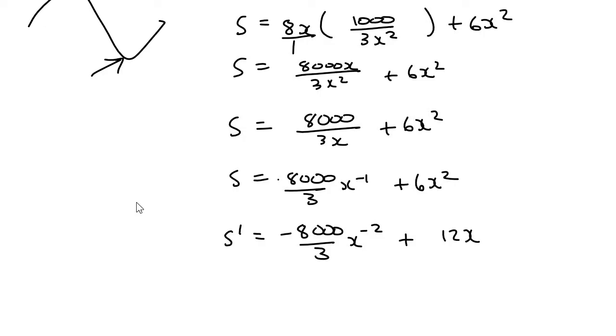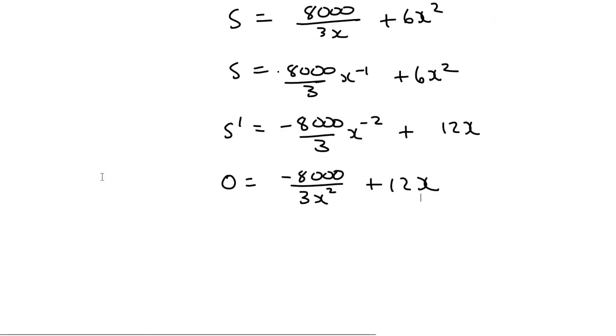Now to find minimums and maximums, you would make that equal to 0. So I'm going to say 0 is equal to minus 8,000 over 3. I'm going to put the x at the bottom again. So x to the power of positive 2 plus 12x. Then I'm going to take the 8,000 over 3x squared over.